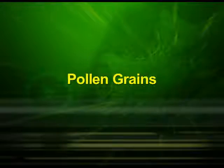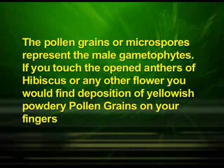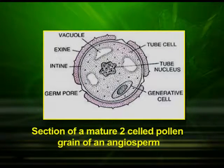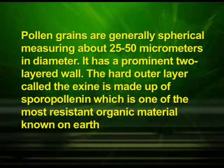Now let us discuss pollen grains. The pollen grains or microspores represent the male gametophytes. If you touch the open anthers of hibiscus or any other flower, you would find deposition of yellowish powdery pollen grains on your fingers. You can observe them by the help of a microscope. Pollen grains are found in a variety of architecture, sizes, shapes, colors and designs. Pollen grains are generally spherical, measuring about 25 to 50 micrometers in diameter.